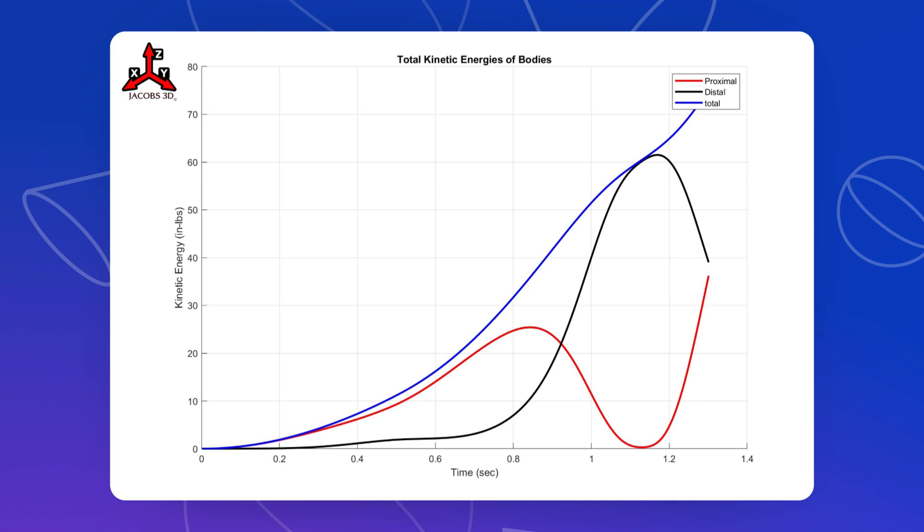Now, as this starts to increase at the distal link, you'll notice that there comes a point right here at about 0.8 where the proximal link starts to transfer its energy to the distal link.